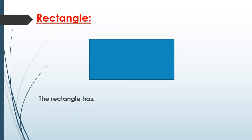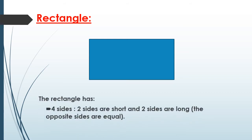Who can tell me what this shape is? It's a rectangle. A rectangle has four sides — two sides are short and two sides are long, and the opposite sides are equal. What does the word opposite mean? They are looking at each other. So the two short sides are equal and the two long sides are equal, and it has four vertices.